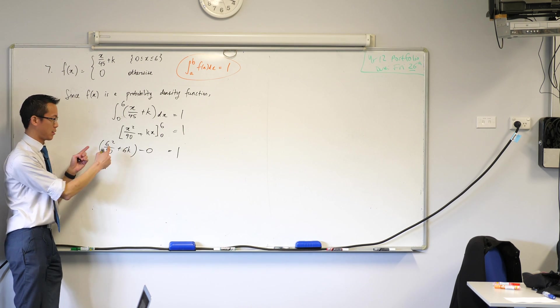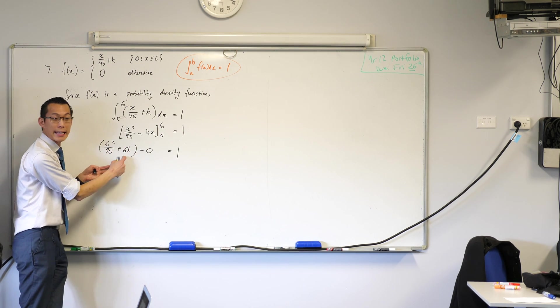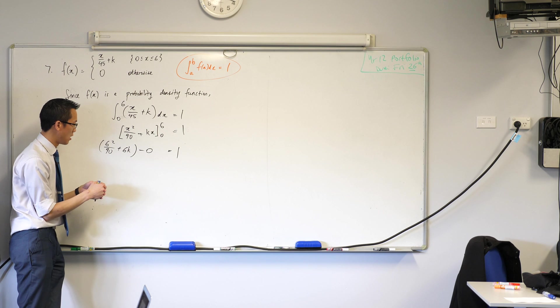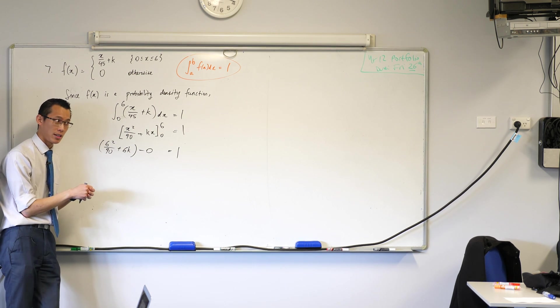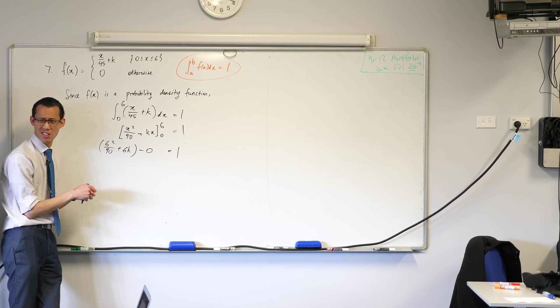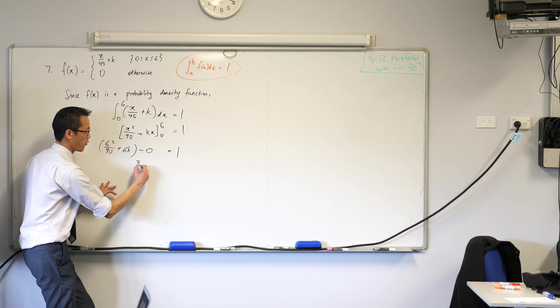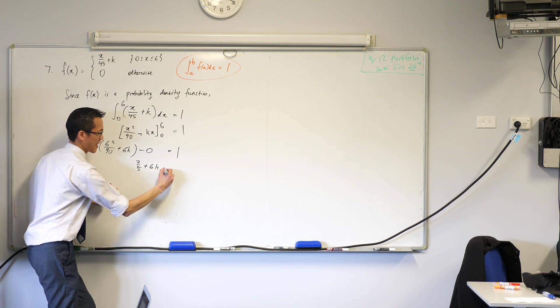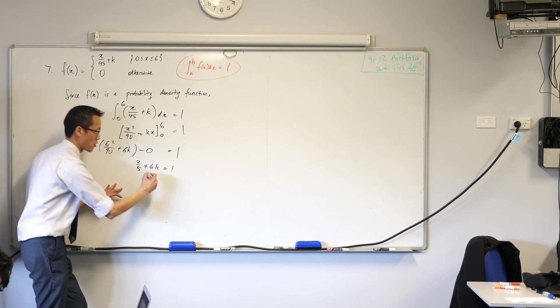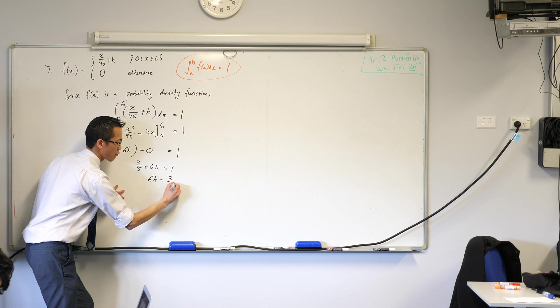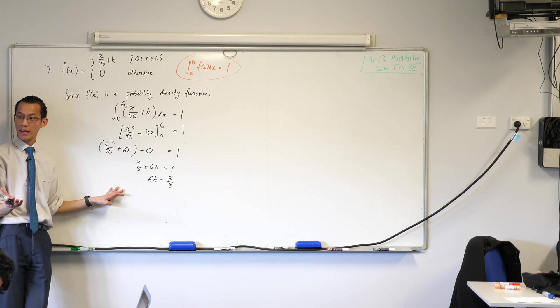And at this point, all I need to do is simplify this stuff, make k the subject. Is that all right? 6 squared on 90. 36 on 90. What's 36 on 90?